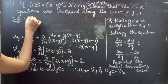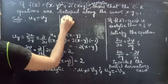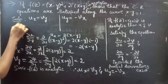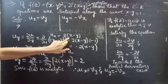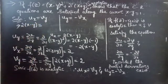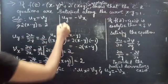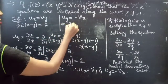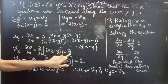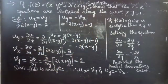Considering the first equation, ux = vy: we have 2(x - y) = 2. For the second equation, uy = -vx: we have -2(x - y) = -2.